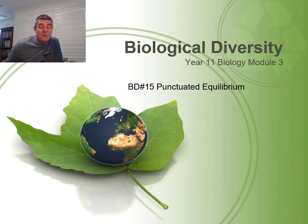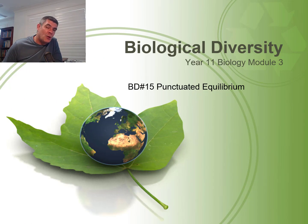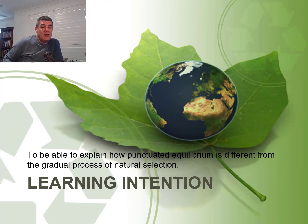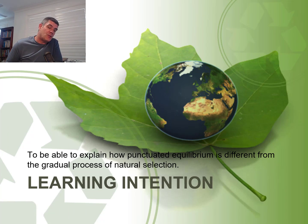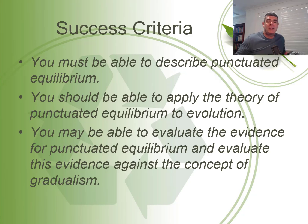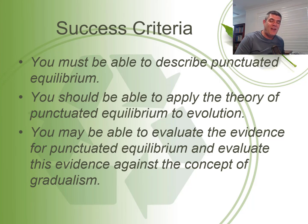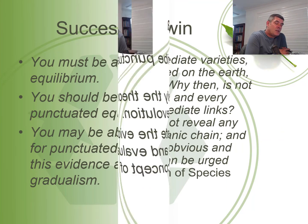Hi students, welcome to Year 11 Biology and Module 3, Biological Diversity. This is video number 15. We're going to be looking at punctuated equilibrium. The learning intention is that you could be able to explain how punctuated equilibrium is different from the gradual process of natural selection, describe what the idea of punctuated equilibrium represents, how we apply that theory to evolution, and potentially even evaluate the evidence that supports punctuated equilibrium against the concept of gradualism.